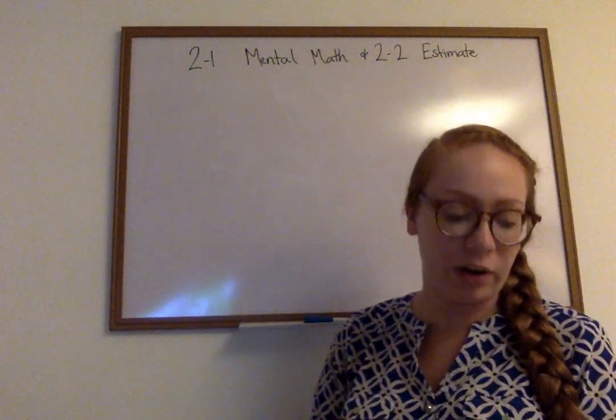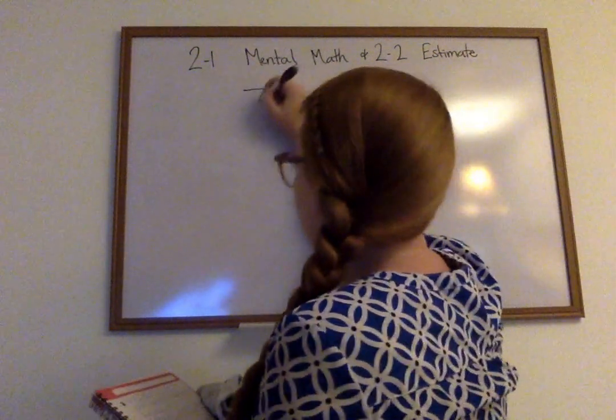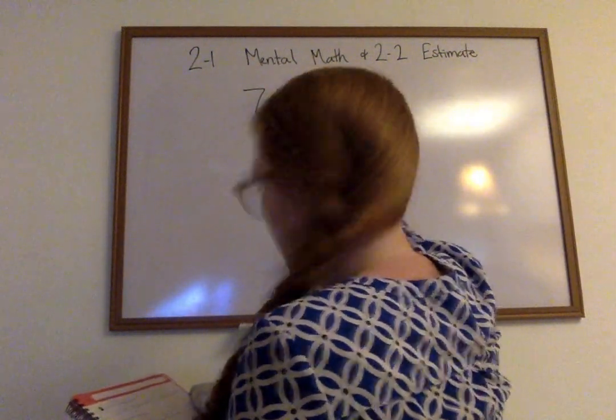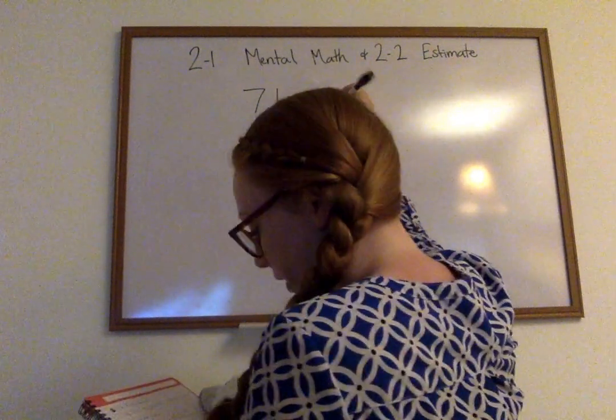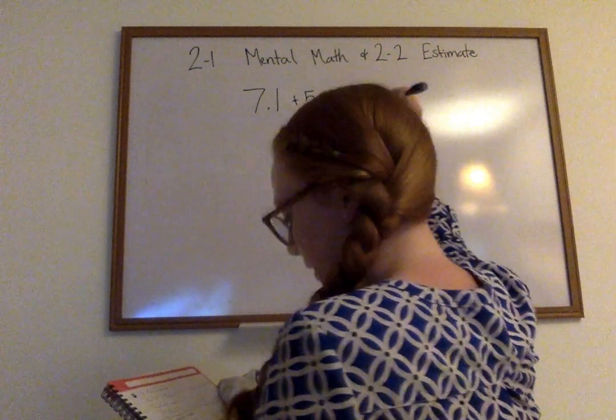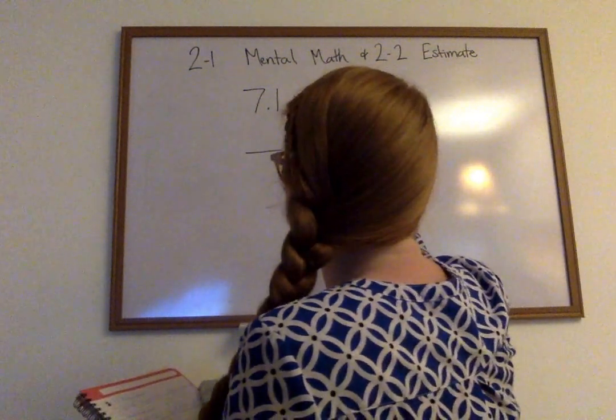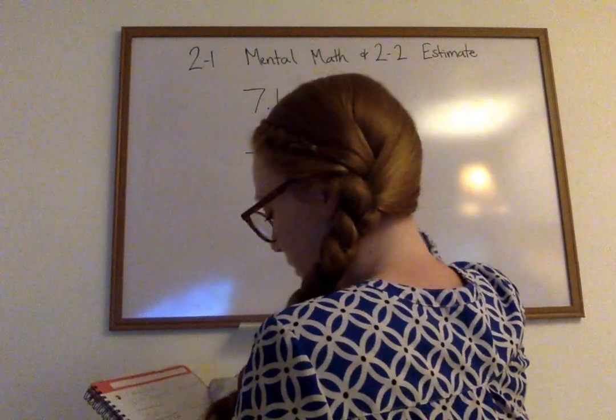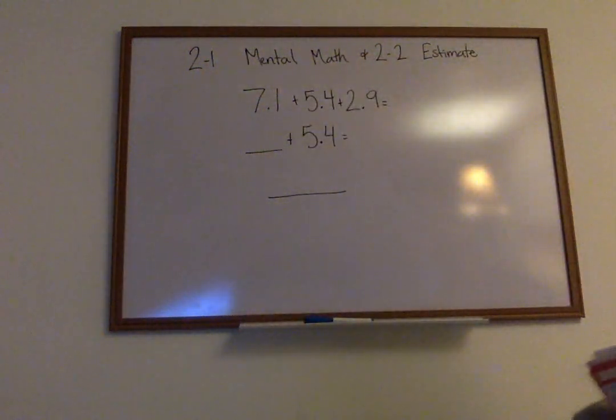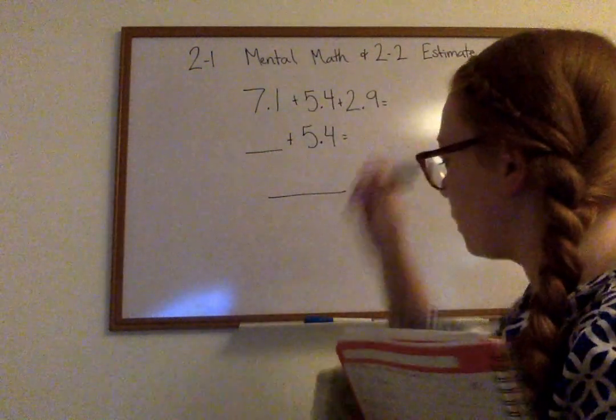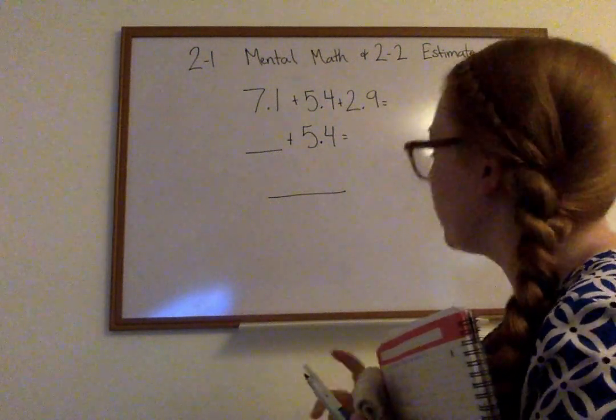So if we look at our mental math, I'm going to show some example problems. 7.1 plus 5.4 plus 2.9 equals blank, plus 5.4 equals blank. So right here, we've got to figure out what we're going to do next. We see that they brought our 5.4 right on down,